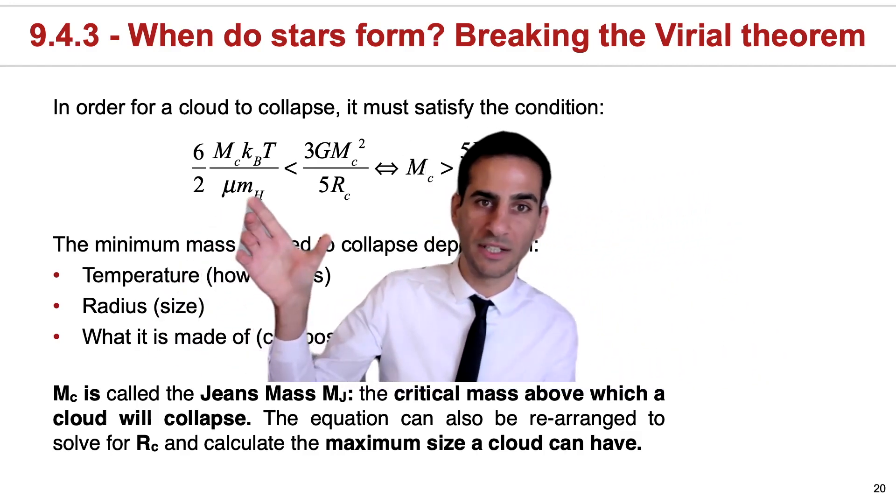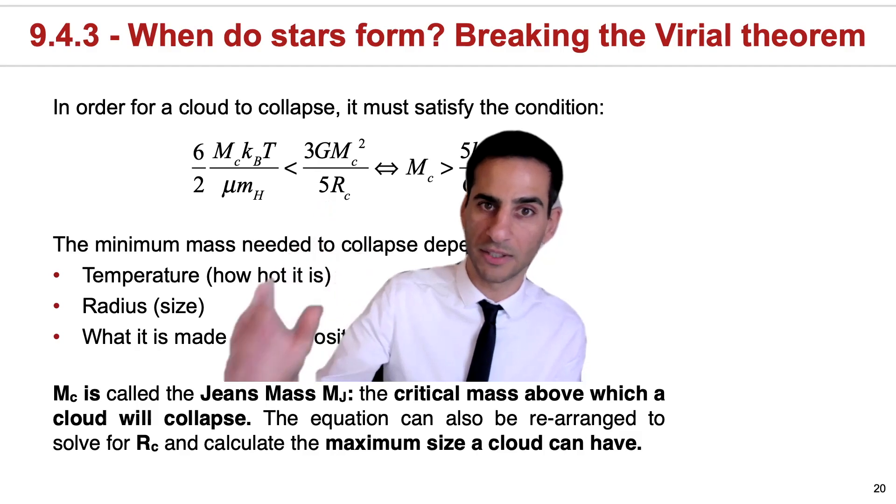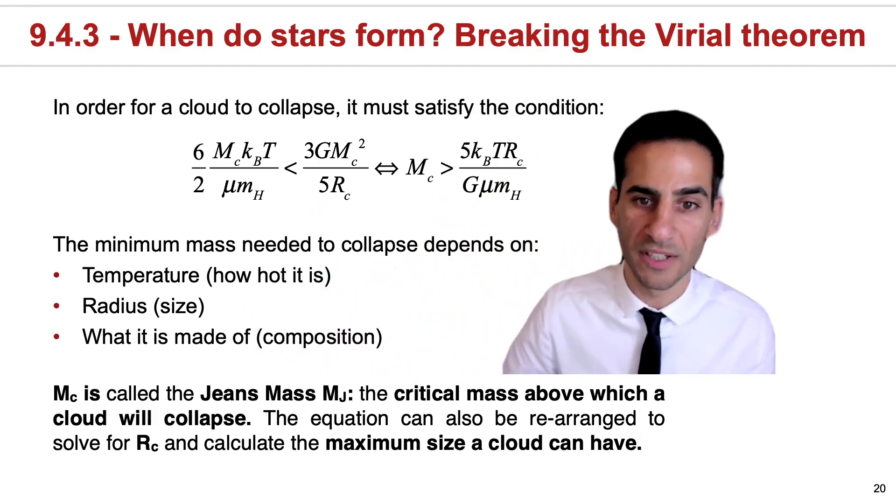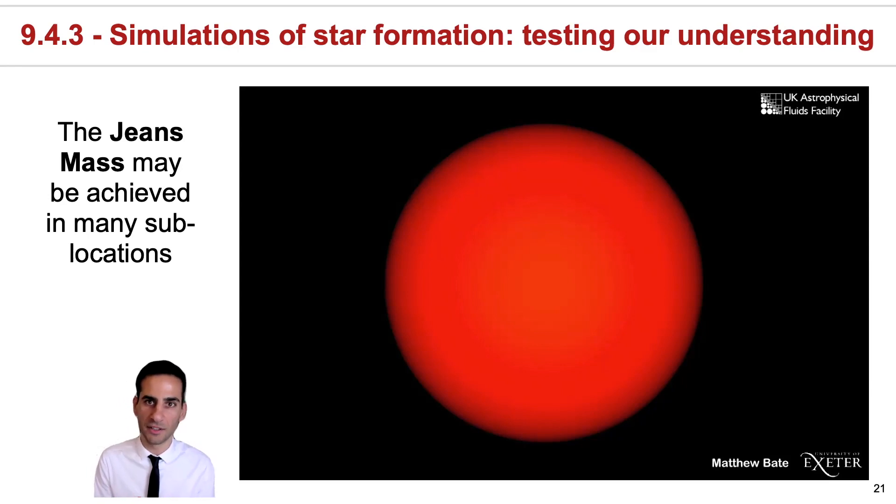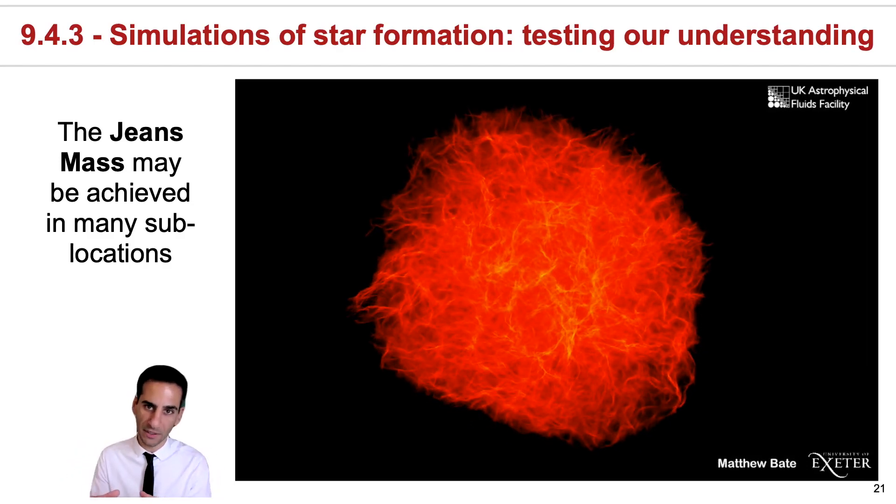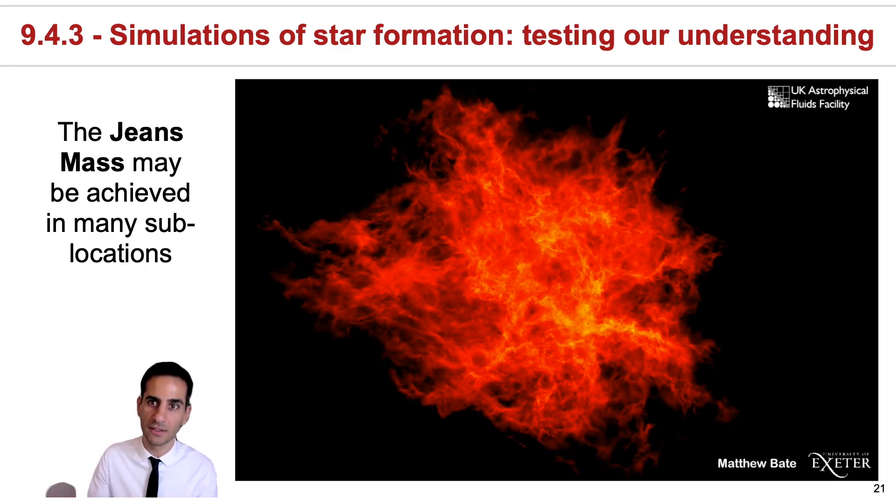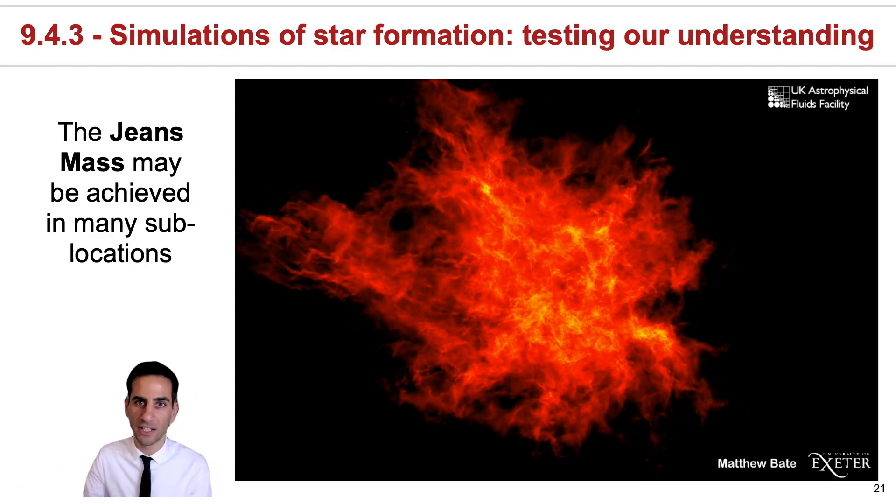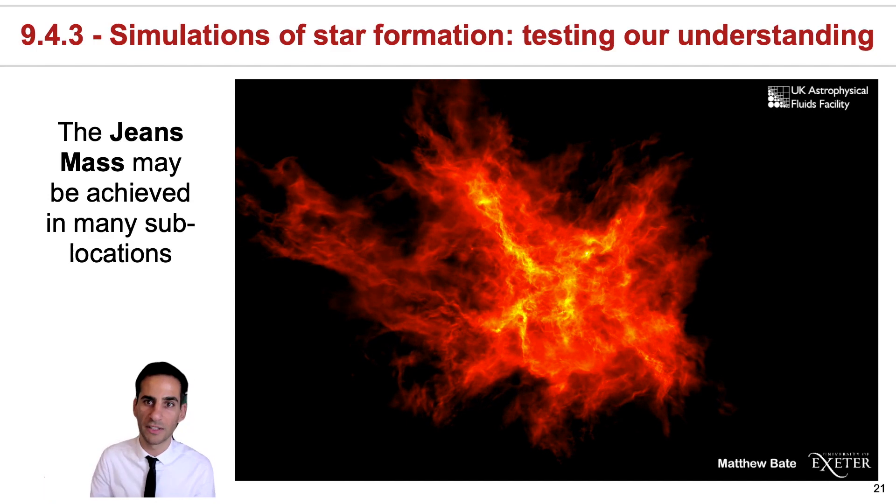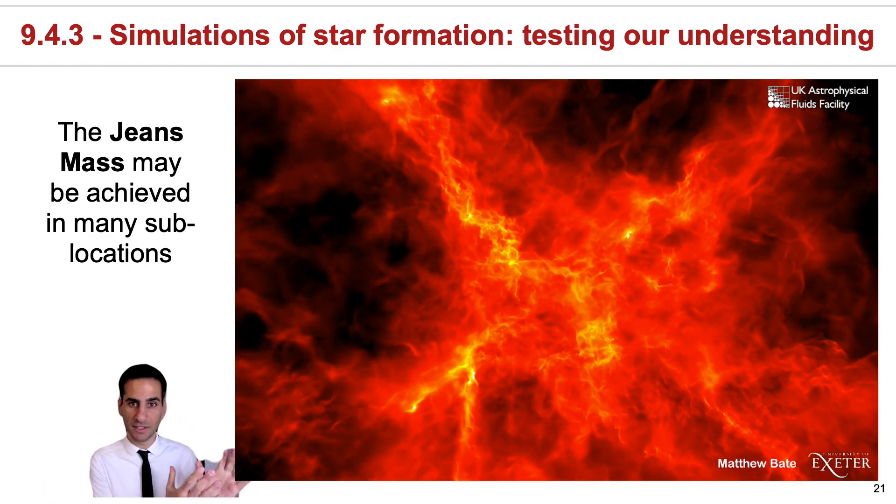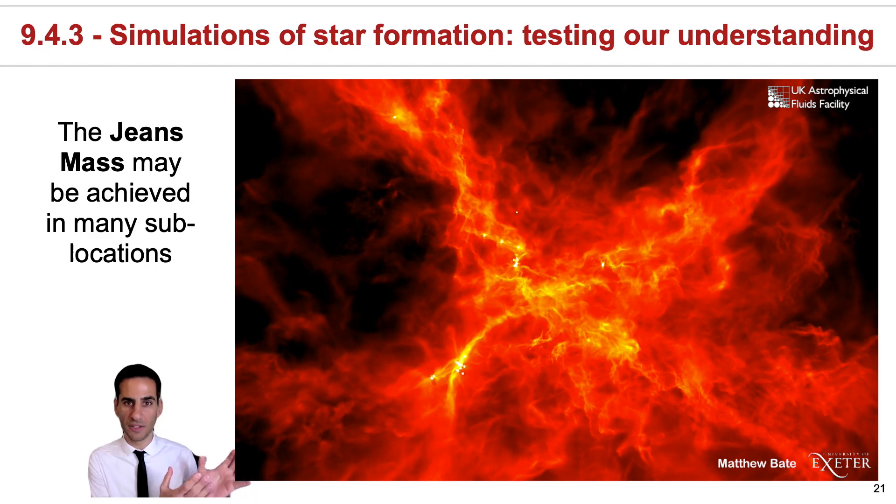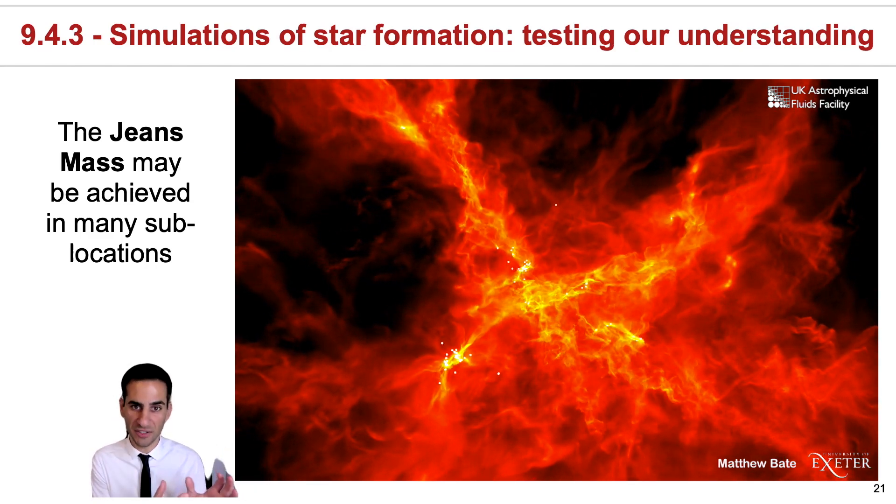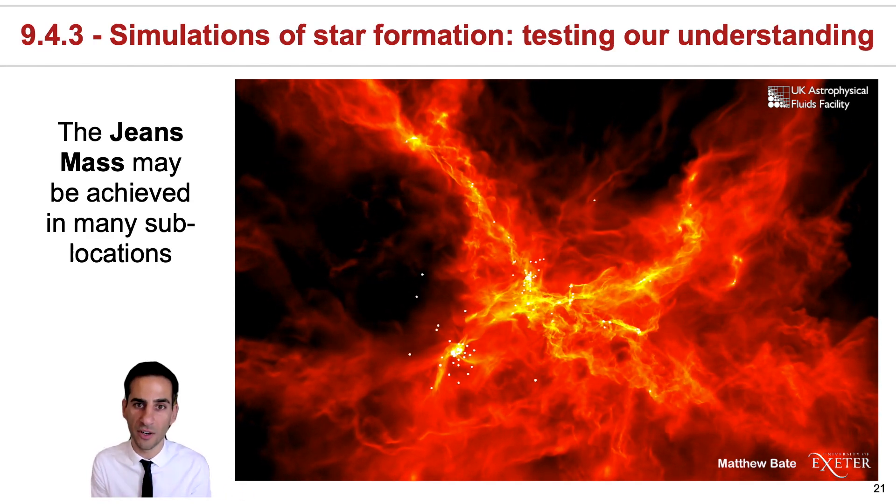And of course, you can always go back to this relation and instead solve for the size of the cloud, meaning you would be solving for the Jeans radius or essentially the maximum size a cloud can have for it to collapse. The Jeans mass and any condition for a cloud to collapse can actually be achieved locally. And this means that even if you start off with a big cloud that starts collapsing, at some point you may actually achieve the Jeans mass in sublocations. And within those sublocations, you're actually going to get that subcloud to collapse independently of the big one. And in simulations such as this one, we can really see the process going on. And this resembles essentially what we did. We're starting with the spherical cloud that is homogeneous to begin with. And then we can see what is happening as stars form.